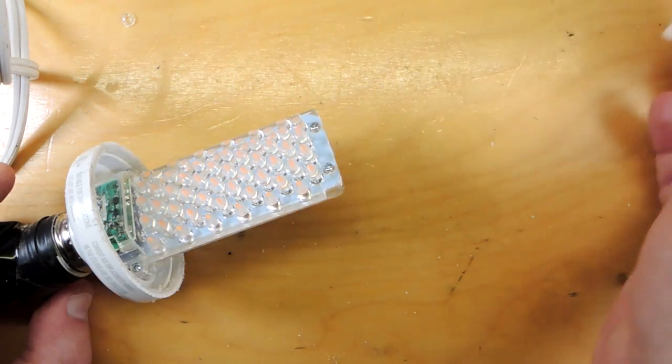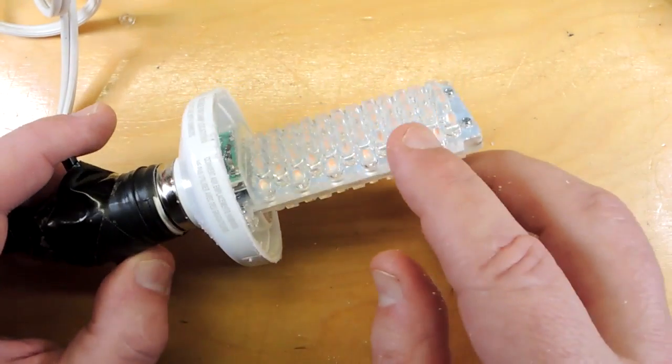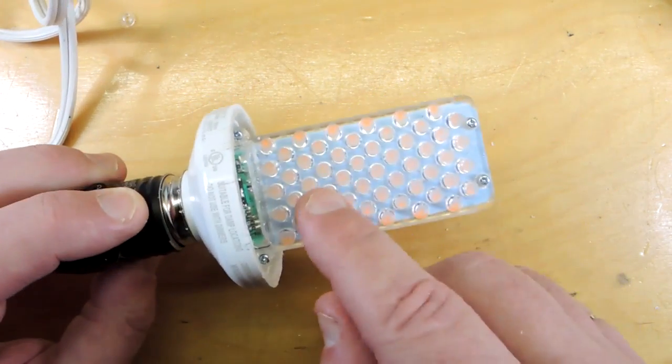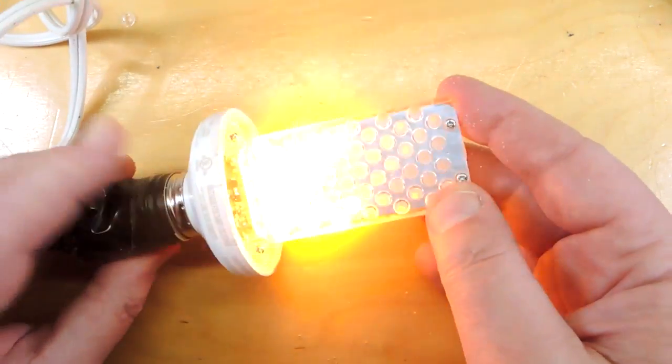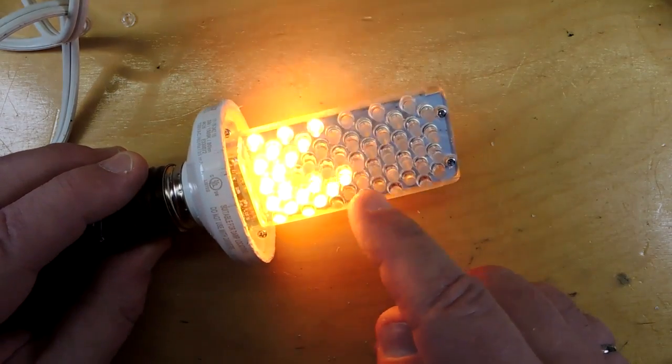So the diffuser dome's been sawn off, and you can see two polycarbonate lenses, and there's a matrix of LEDs on both sides. If I turn the bulb on, you can see the flame pattern has been programmed in.